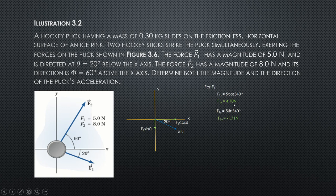For the y component of force 1, F1y is 5 sine 340 degrees, which gives you negative 1.71 N. The negative sign indicates the direction of the y component of F1.